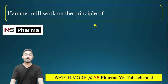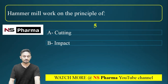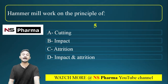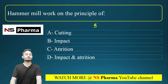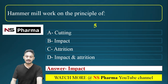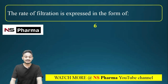Question 5: Hammer mill works on the principle of — options: (a) cutting, (b) impact, (c) attrition, (d) impact and attrition. The correct answer is option B: impact. Hammer mill works on the principle of impact.